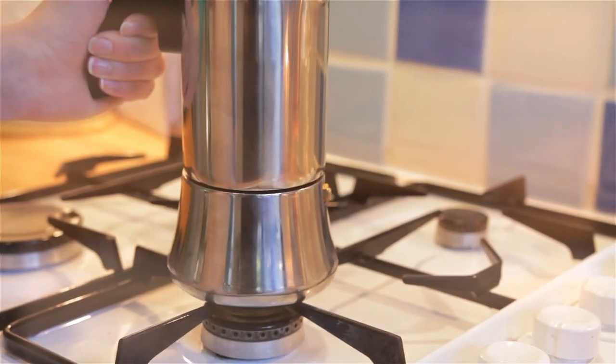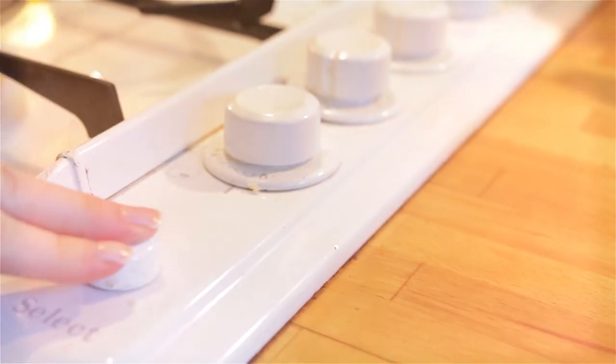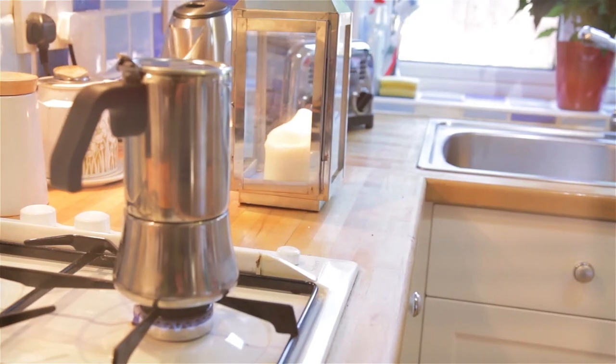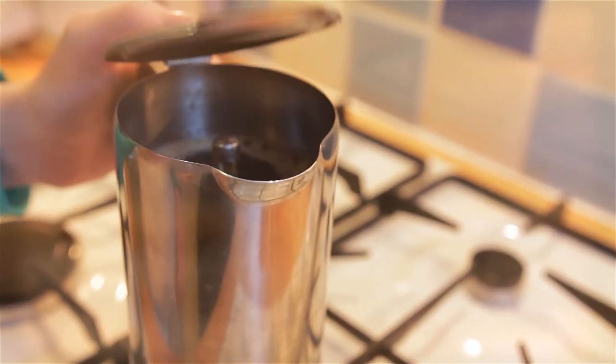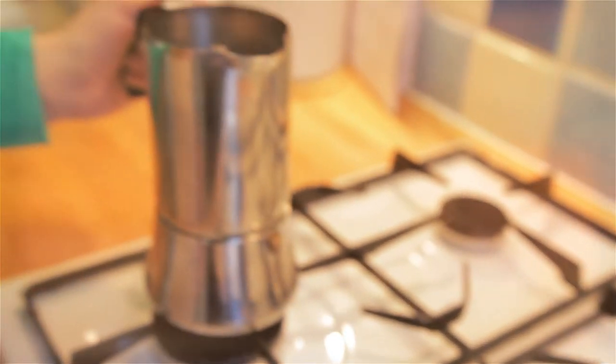Put your espresso maker onto a medium heat and leave to boil for approximately three to four minutes, or until the coffee starts pouring through at a steady rate. Finally, take off the heat and serve.